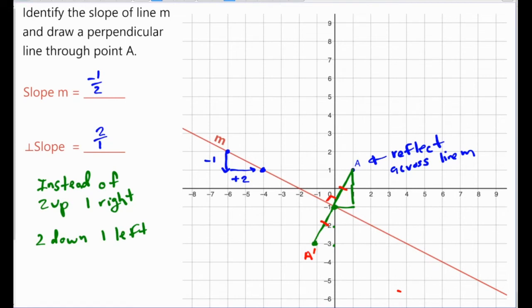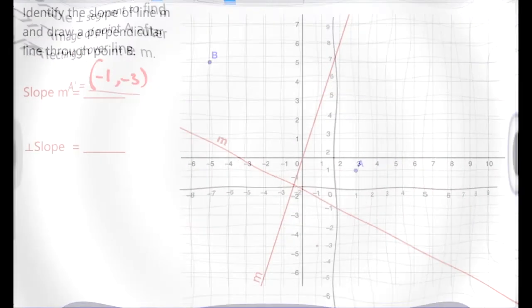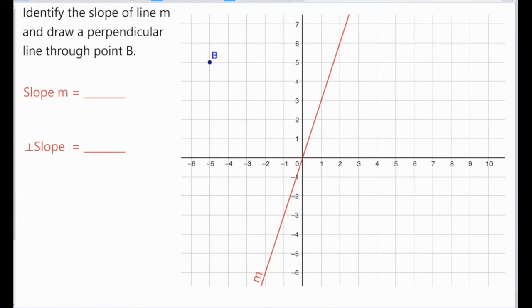We have satisfied the perpendicular and equidistant aspects of the reflection, and I can say that this is the image point A prime at the location negative 1 negative 3. Here's the next example—pause the video here, try to do this on your own, and then unpause to watch me guide you through the solution.